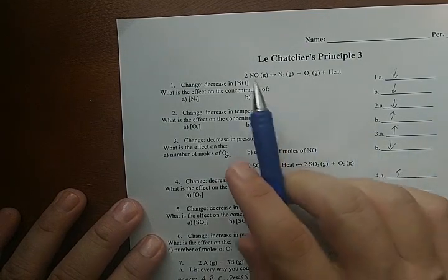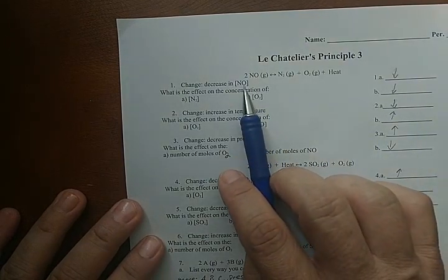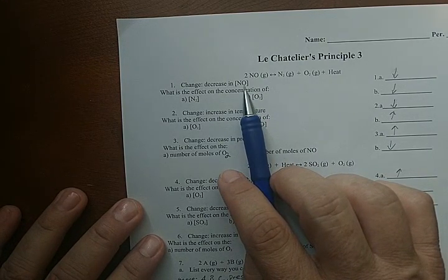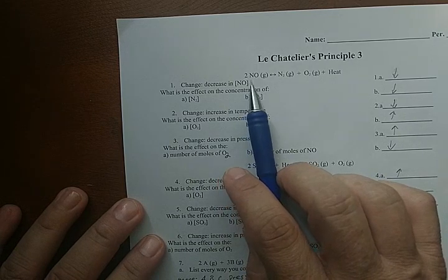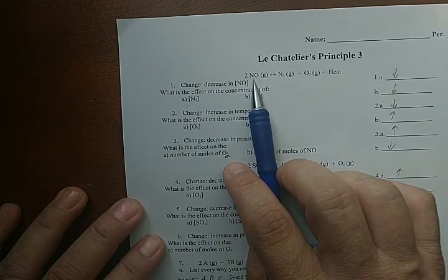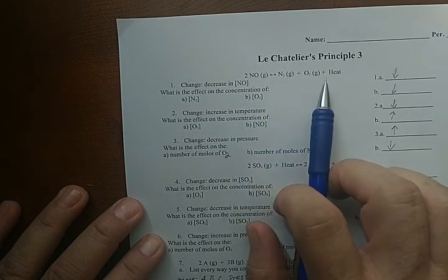So what happens if we decrease the molarity of the NO? Brackets means molarity, by the way. So if we decrease the NO, the left side is weaker. It doesn't have as much NO to do its job of going to the right and making the stuff on the right.